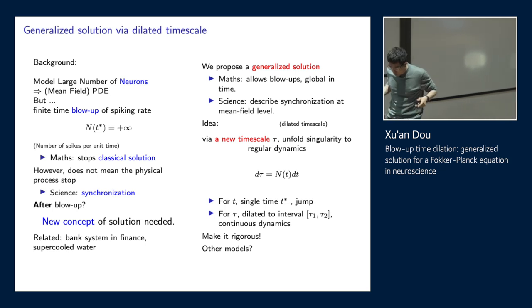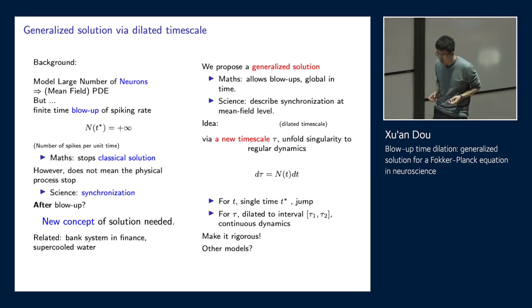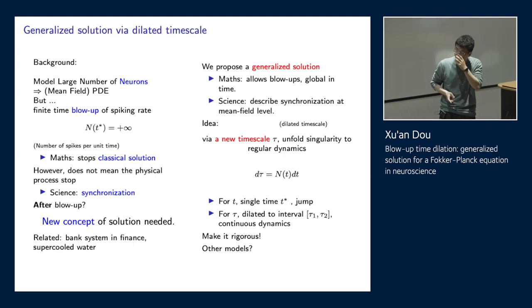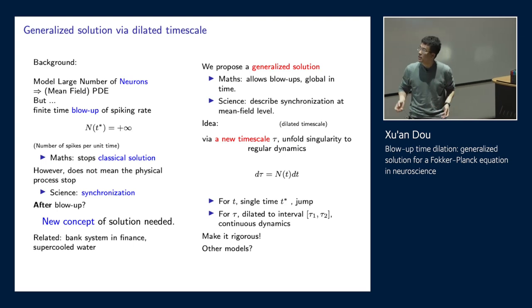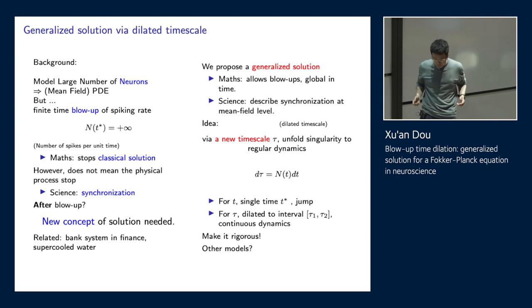There are a large number of neurons in our brain. If we describe each of them, this will lead to a high dimensional model which is complicated. So people have developed the meanfield model to describe a group of neurons with a PDE. But there is a problem. The finite time blow up of the spiking rate n of t. So n of t is a function of the solution which is important to the evolution. But there may exist a time t star. At t star, the firing rate blows up to infinity. So what does this mean? Mathematically, this means you cannot have a global classical solution. The classical solution will stop at t star. But this does not mean the physical process also stops. This does not mean the neural network will stop at t star. Rather, scientifically, this means the neural network is synchronized at t star. All the neurons spike together. They give action potential. They emit signals at t star.